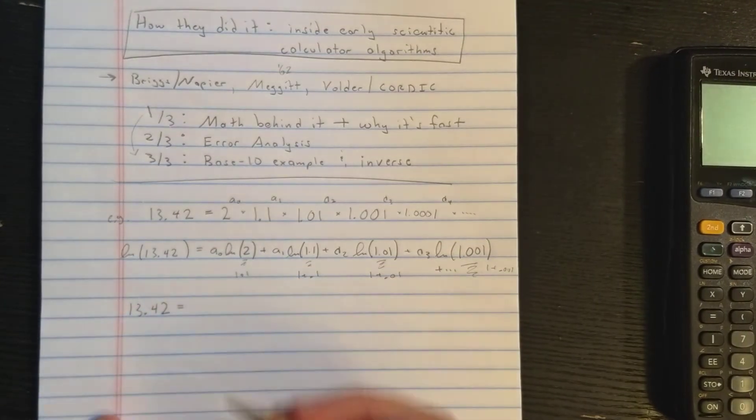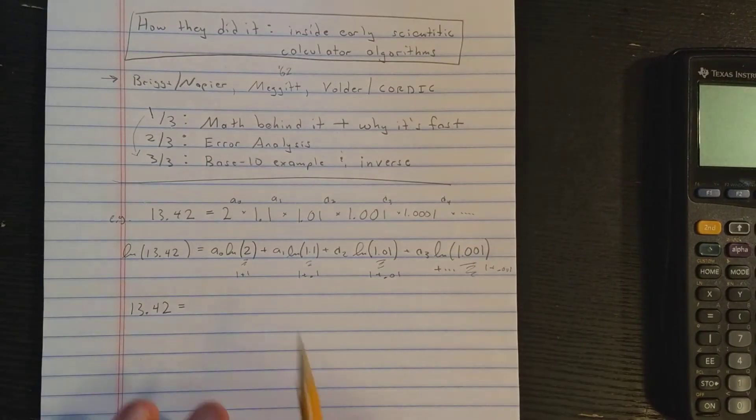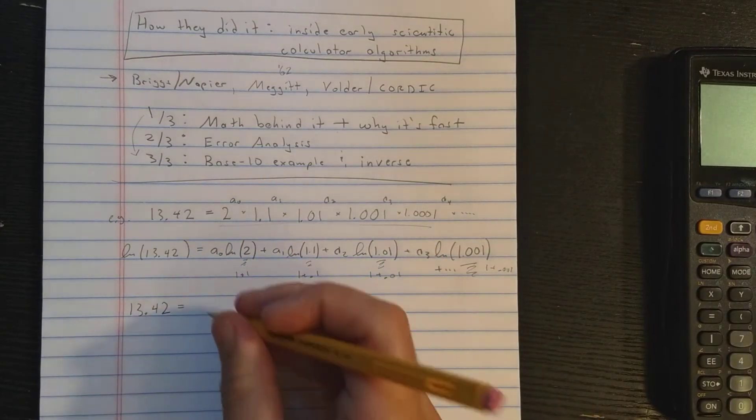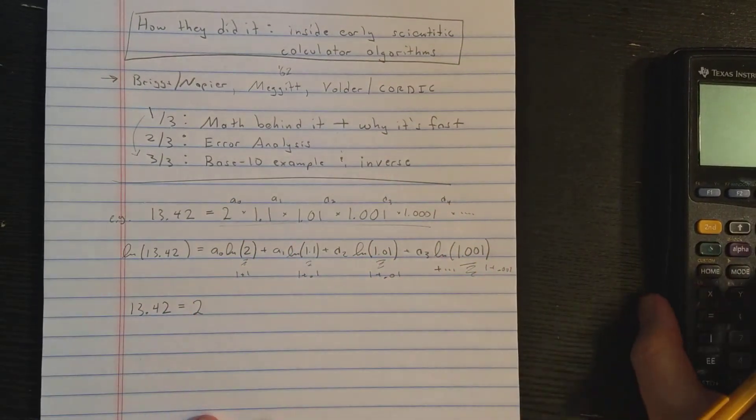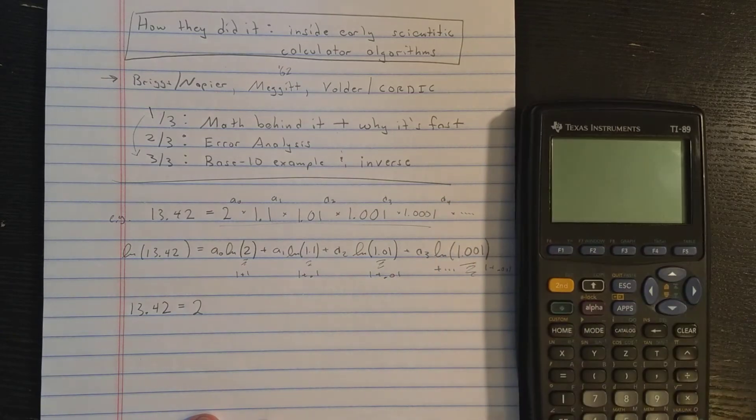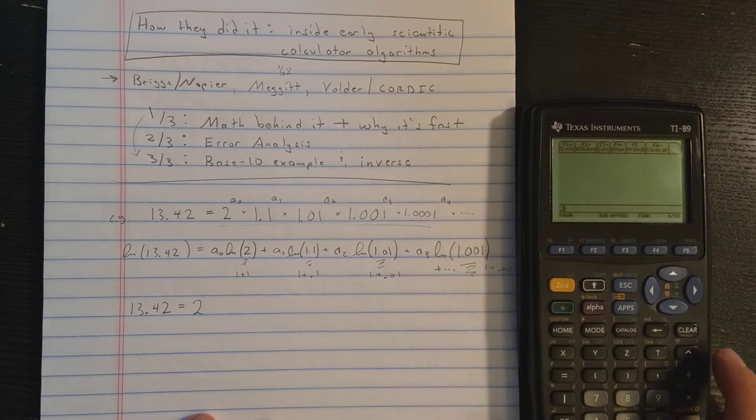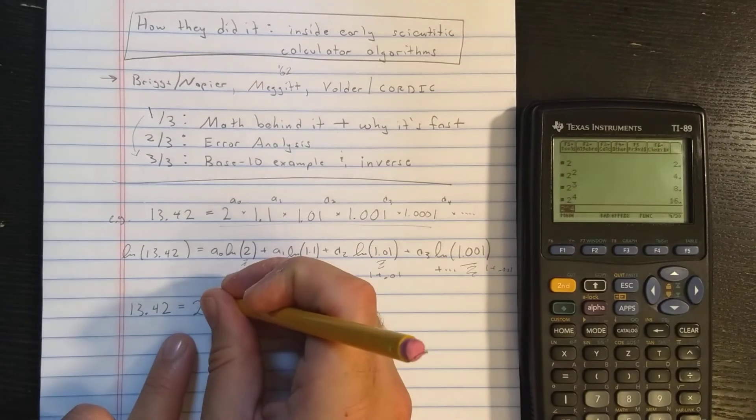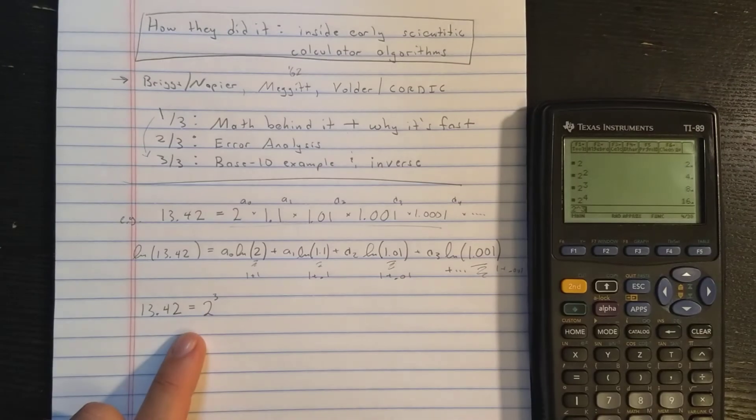Okay, so first let's rewrite 13.42 as this strange product. So to determine what power I should put on 2, I'll just use this very non-vintage TI-89 calculator. Well, I could start with 2, then let's see. 2 to the 2nd power, that's 4. 2 to the 3rd power, that's 8. 2 to the 4th power, that's 16. That's too big. So it must be 2 to the 3rd power.